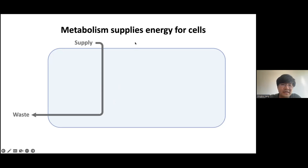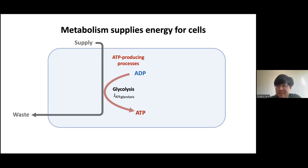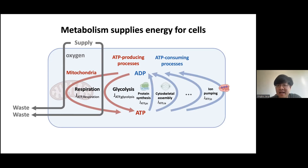Metabolism supplies energy for cellular processes — it constitutes a collection of reactions that converts energy from the environment to drive different cellular processes. One very important energy cycle inside the cell is the ATP cycle. ATP, known as the energy currency of the cell, can be produced via several pathways including glycolysis, which happens in the cytoplasm, and respiration, which happens in mitochondria — usually known as the powerhouse of the cell. Respiration consumes oxygen to produce ATP.